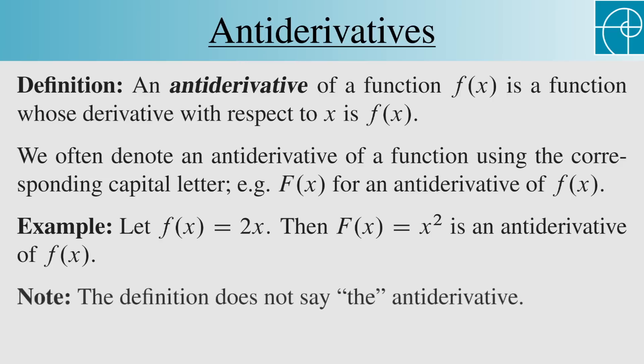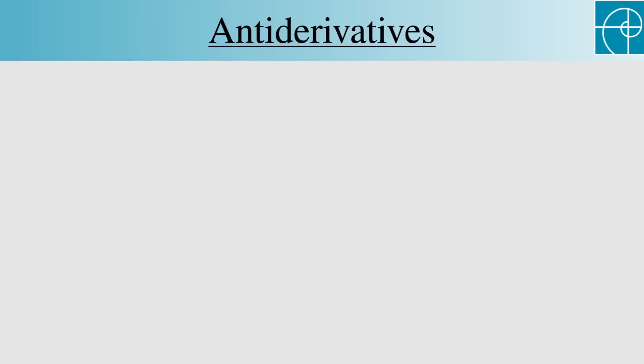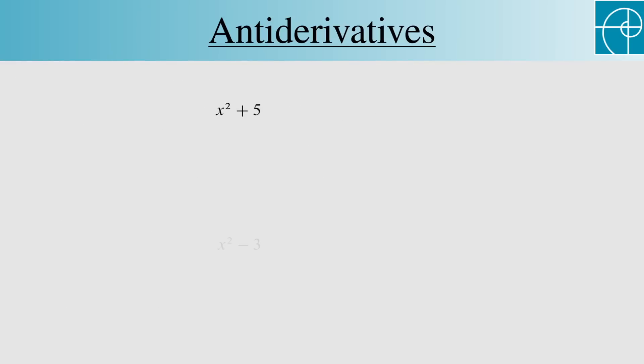Note that the definition doesn't say the antiderivative. Let's think about that. We could start with either x squared plus 5 or x squared minus 3, or actually lots of other functions too, and get the same derivative, 2x.